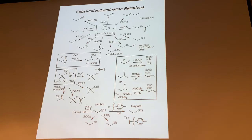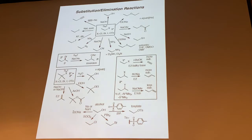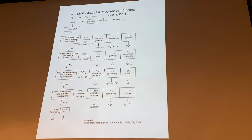You can also form tosylate leaving groups, or convert an alcohol to a bromide with HBr or PBr3. PBr3 is nice because no rearrangements, whereas HBr can give rearrangements before substitution. You can form the alkoxide with strong base — sodium hydride, sodium amide, or sodium metal. These are good SN2 nucleophiles — backside attack gives an ether product. Decision chart for the mechanism: SN2, SN1, E2, E1 — linking structure with conditions. If it's primary or secondary and a charged nucleophile that's not too basic, always SN2.